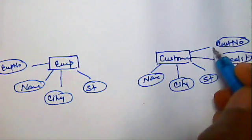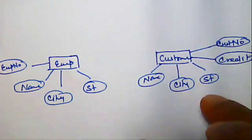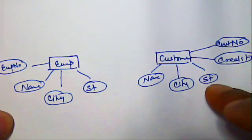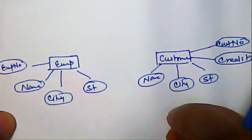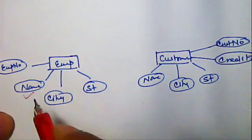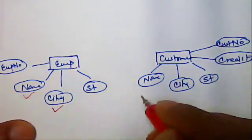Now we analyze it a little bit and see both the entities have some attributes common. For example, both have attribute name, attribute city and attribute street.